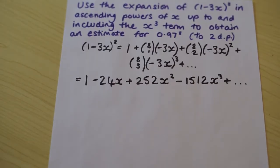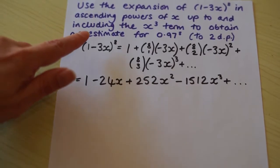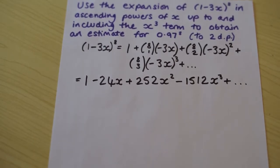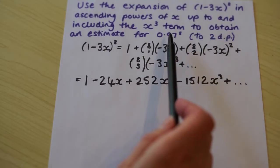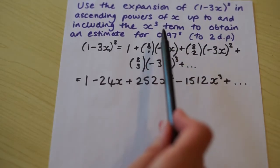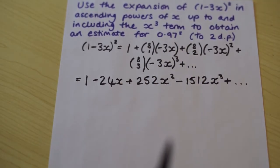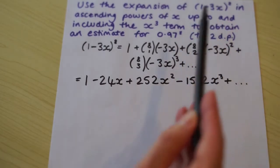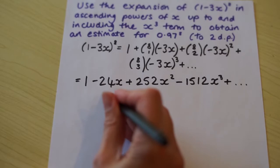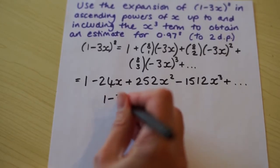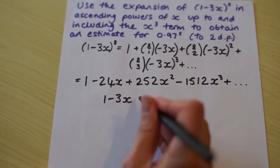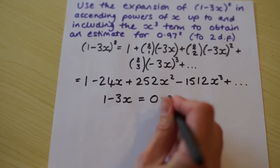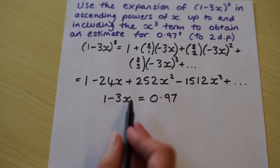And now we need to do the next part of the question. We need to obtain our estimate for 0.97 to the power of 8. So we see that the bracket that we've expanded and what we want is both raised to the power 8. That's handy. And the only difference is what's in the bracket. So if we say that 1 minus 3x equals 0.97, let's find out what this x is.